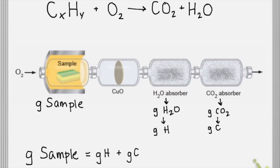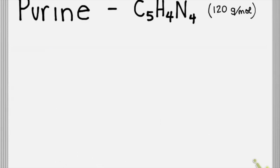Let's try that. Given a known molecule like purine, whose formula is listed there, we can determine how much water and carbon dioxide will be given off. Purine is the simplest form of molecules that make up some of our DNA and RNA components.